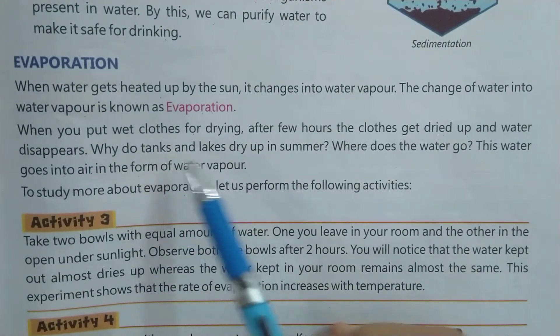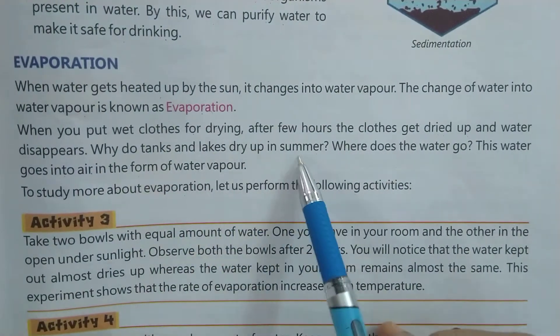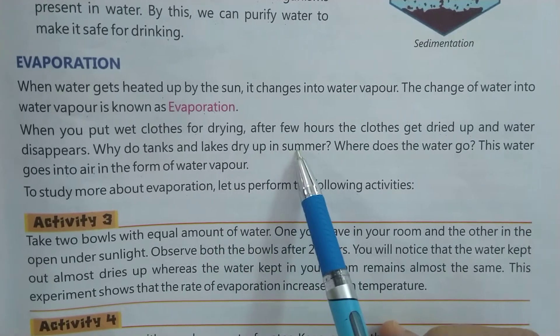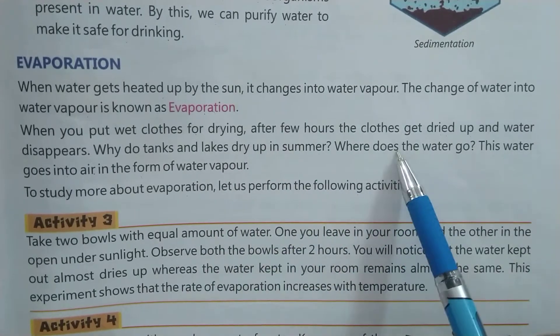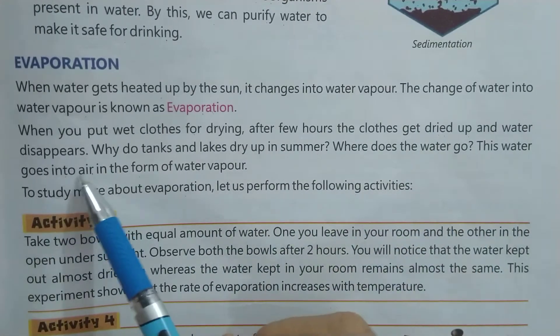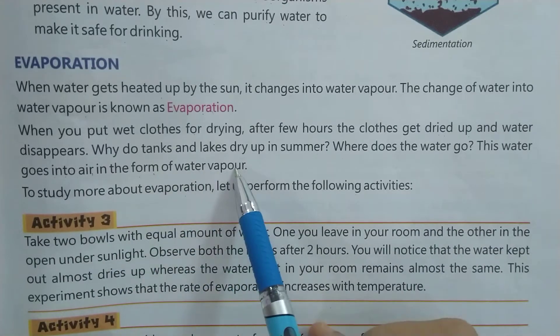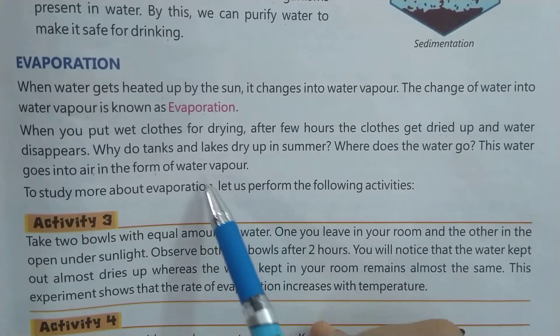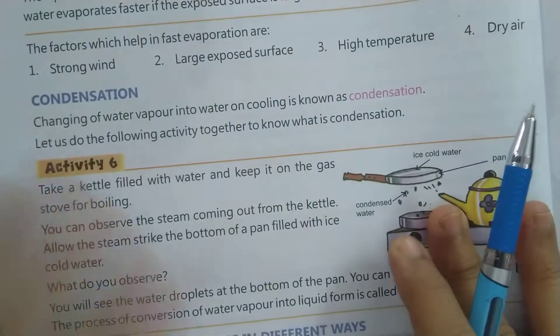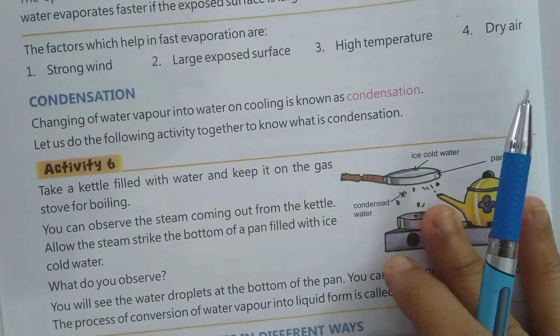इसी तरह से tanks और lakes भी summer में सूरज की गर्मी से dry हो जाते हैं। Where does the water go? यो water कहाँ जाता है? यह water, air में water vapor के form में चला जाता है। इसको हम करने के लिए activities करेंगे — यह activities बच्चे आप घर पे करेंगे।